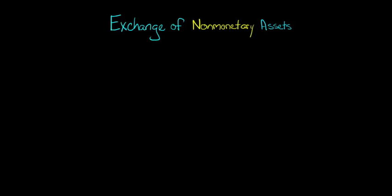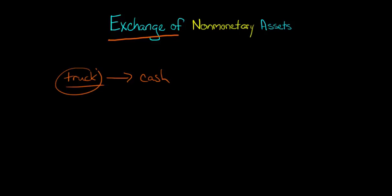In this video, we're going to talk about how to account for an exchange of non-monetary assets. So what are we even talking about here? Let's say that you have a truck, and you decided that you don't want that truck anymore — you'd actually like to get a different type of truck. One thing you could do is sell this truck for cash and then take that cash and go buy the kind of truck that you want. But another thing you could do is, if you found a company that had the kind of truck you wanted, you could actually go and swap your truck for that other company's truck if they want your truck.